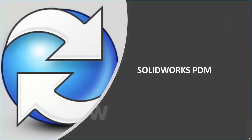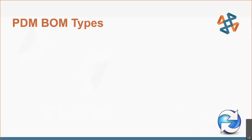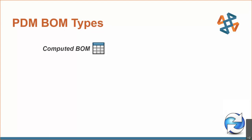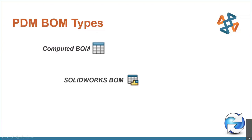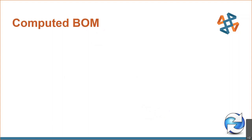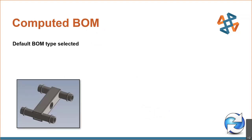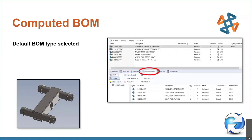Starting on PDM, we're going to talk about SOLIDWORKS PDM. The first couple of options here are going to be both flavors of PDM. We have our computed BOM — that's the computed bill of material icon. This is our SOLIDWORKS bill of material, and then we have our named bill of material, which shows the floppy disk icon along with the computed bill of material symbol. The computed bill of material is the default bill of material type selected in PDM — this is the most widely used one.